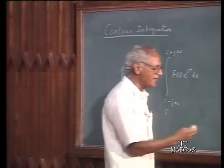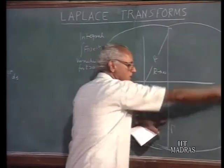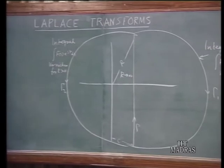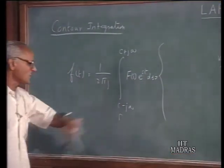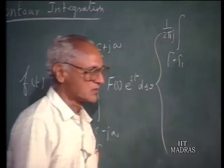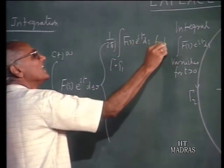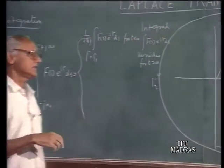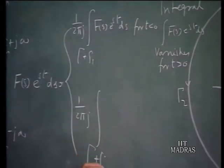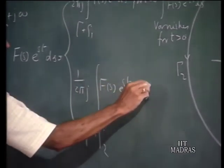Since we want to evaluate this integral along the contour from one point to the other, nothing is lost if we add this large semicircle for t less than 0, or the other large semicircle for t greater than 0. So, 1 over 2πj times the integral along the closed contour gamma plus gamma 1 of F(s) e^(st) ds for t less than 0 — since we are adding a quantity equal to zero — equals 1 over 2πj times the integral along the closed contour for t greater than 0.